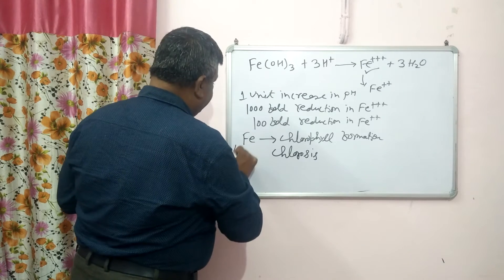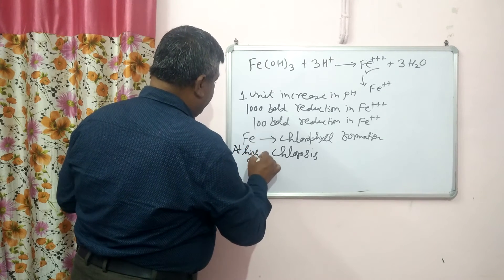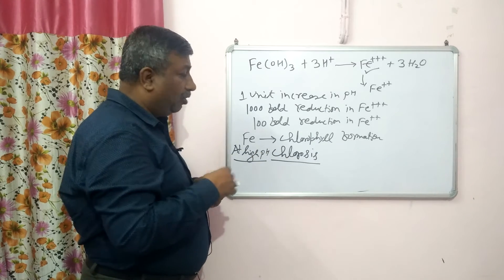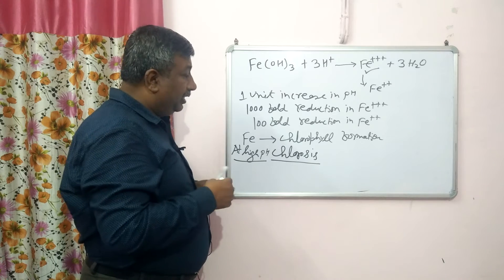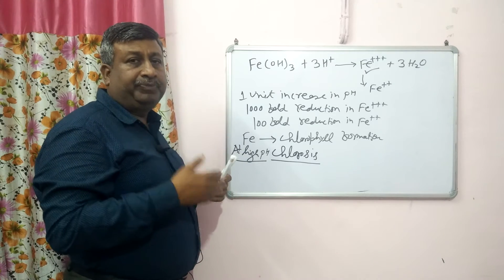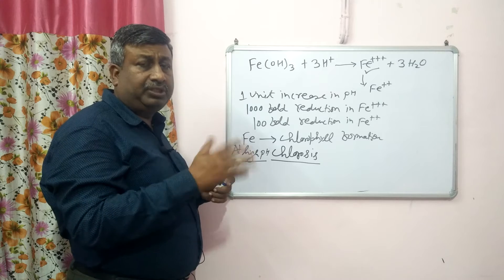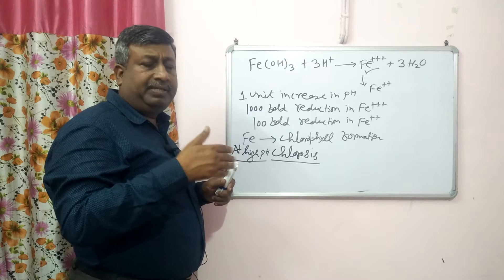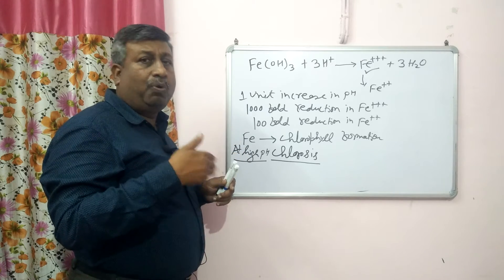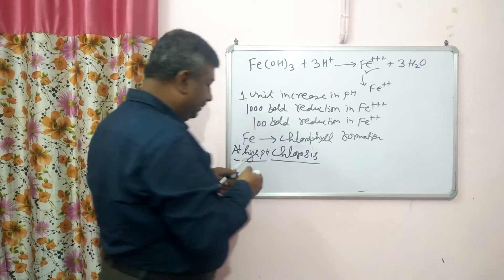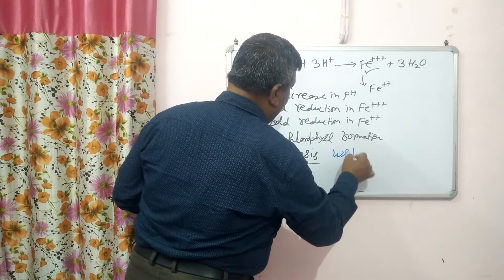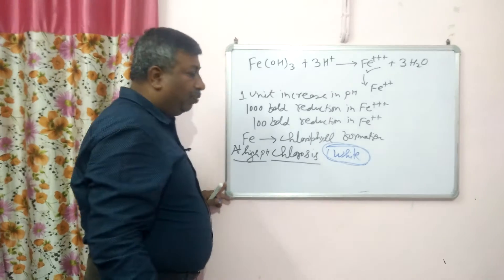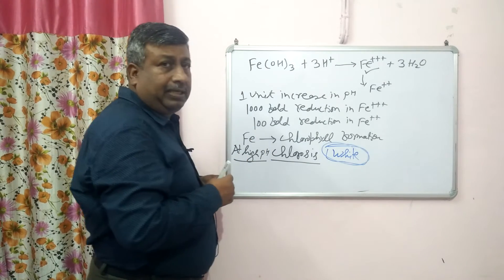At high pH — more than 7 — there is chlorosis, meaning loss of chlorophyll. Under high pH conditions, plants show a yellowish-white color. This is the iron deficiency symptom: no chlorophyll formation. First there is loss of chlorophyll, and in cases of acute deficiency, leaves become papery white. The whole leaf becomes papery white.